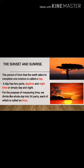This period of time that the Earth takes to complete one rotation is called a day. A day has two parts, day time and night time, which we simply call it as day and night. For the purpose of measuring time, we divide the whole day into 24 parts, each of which is called an hour.